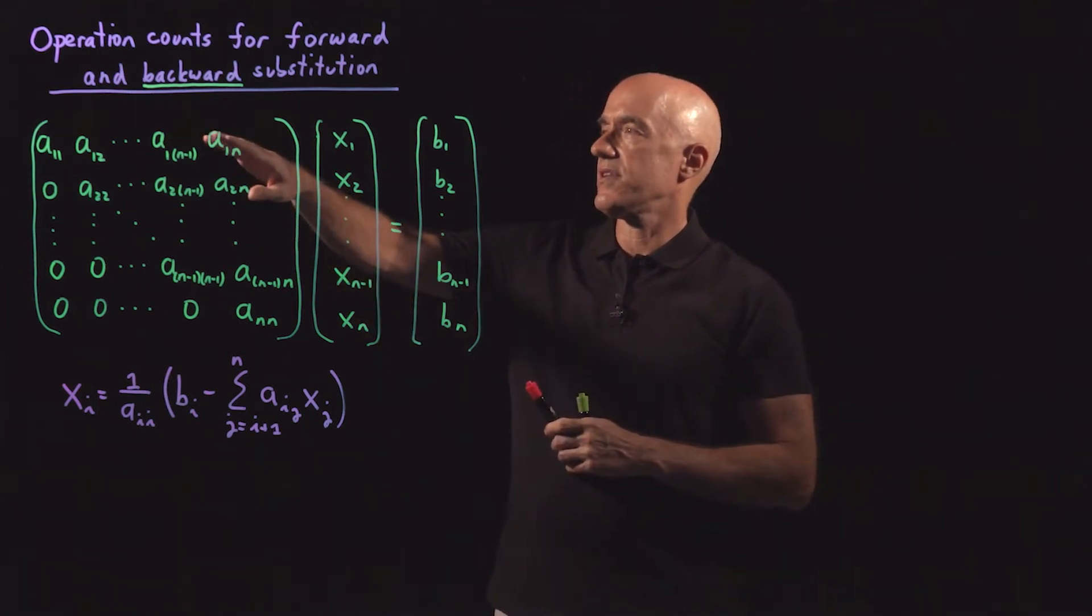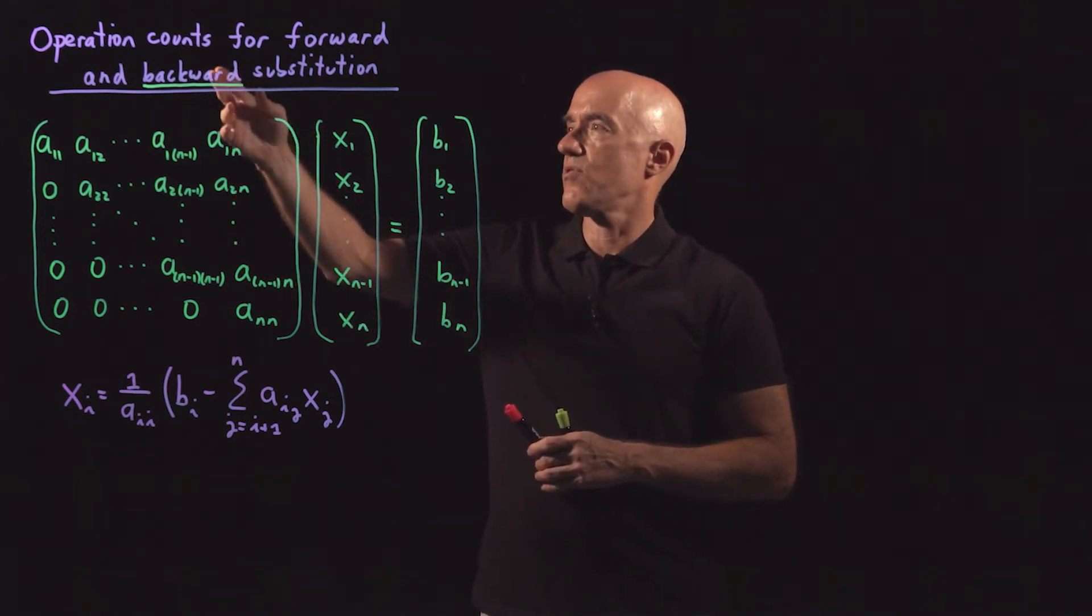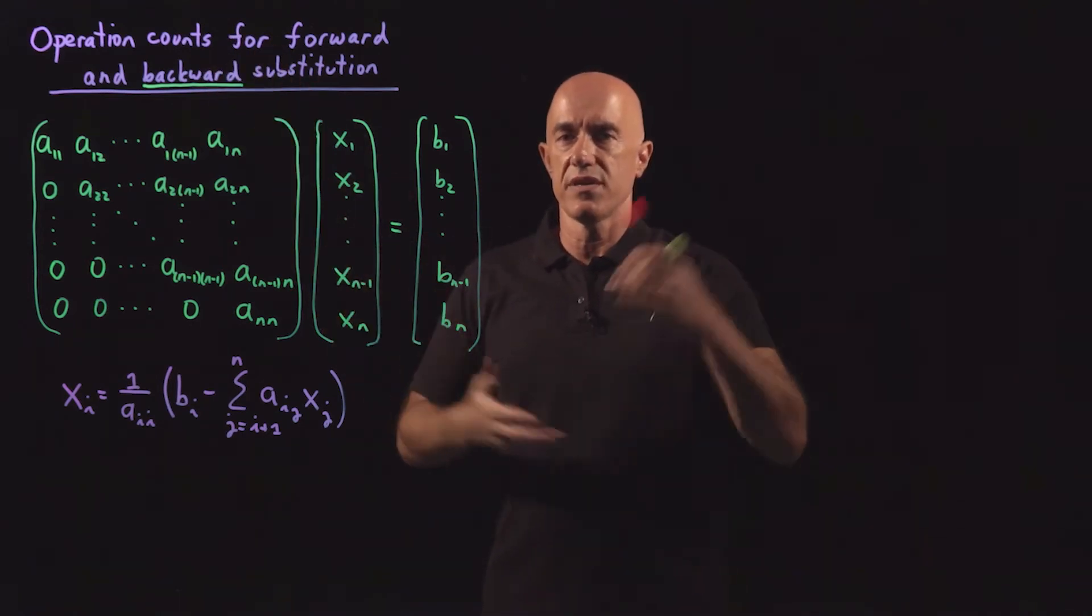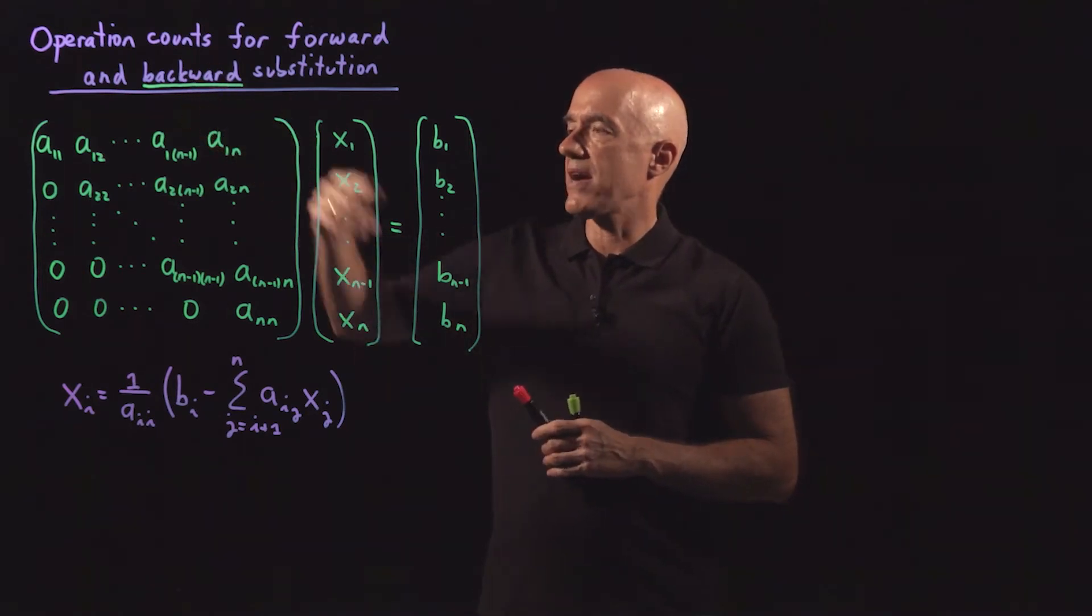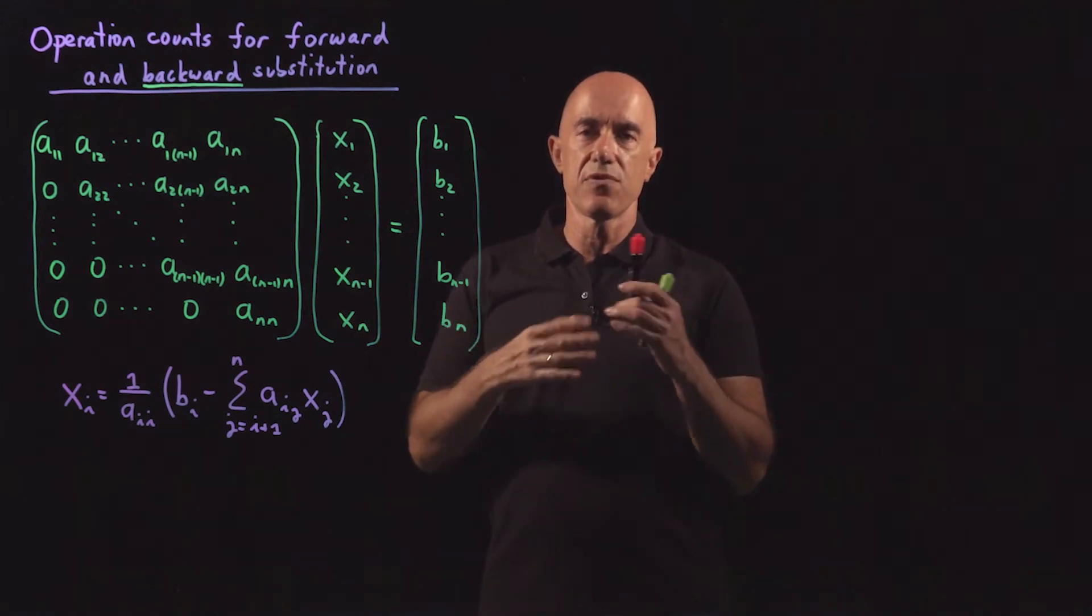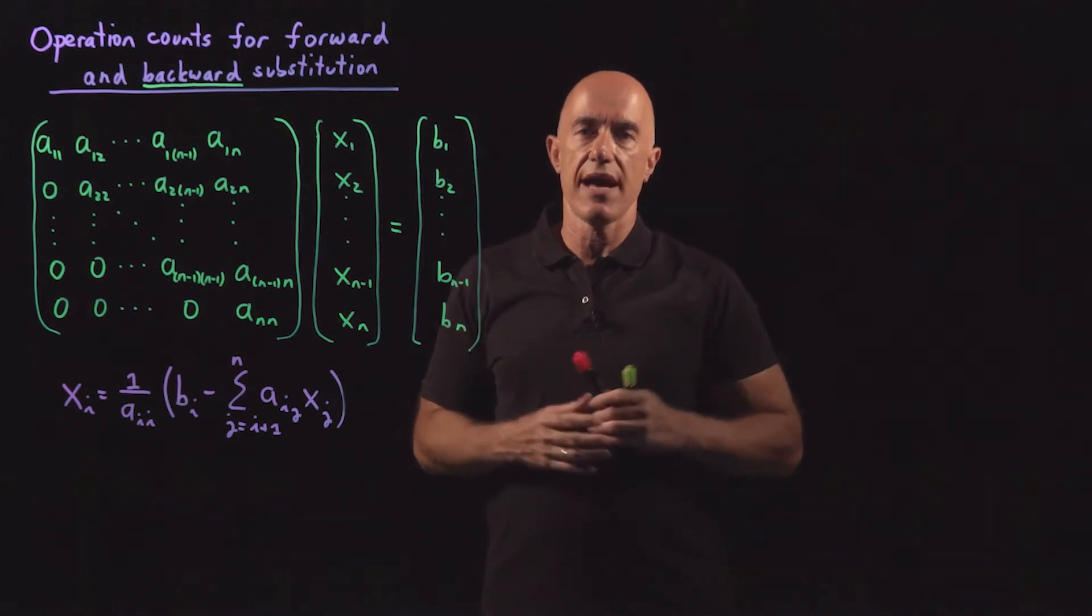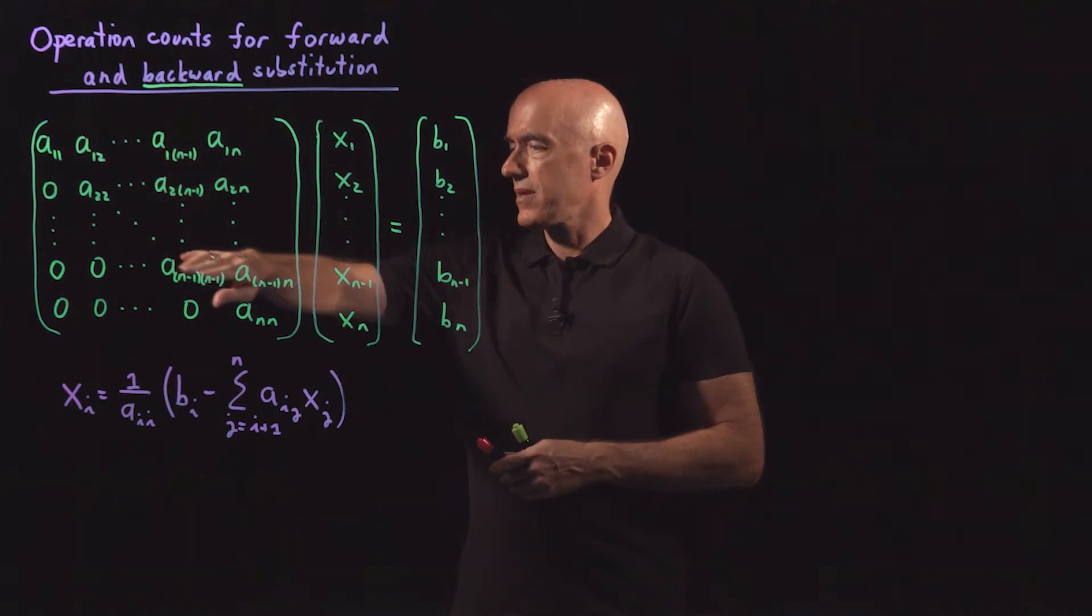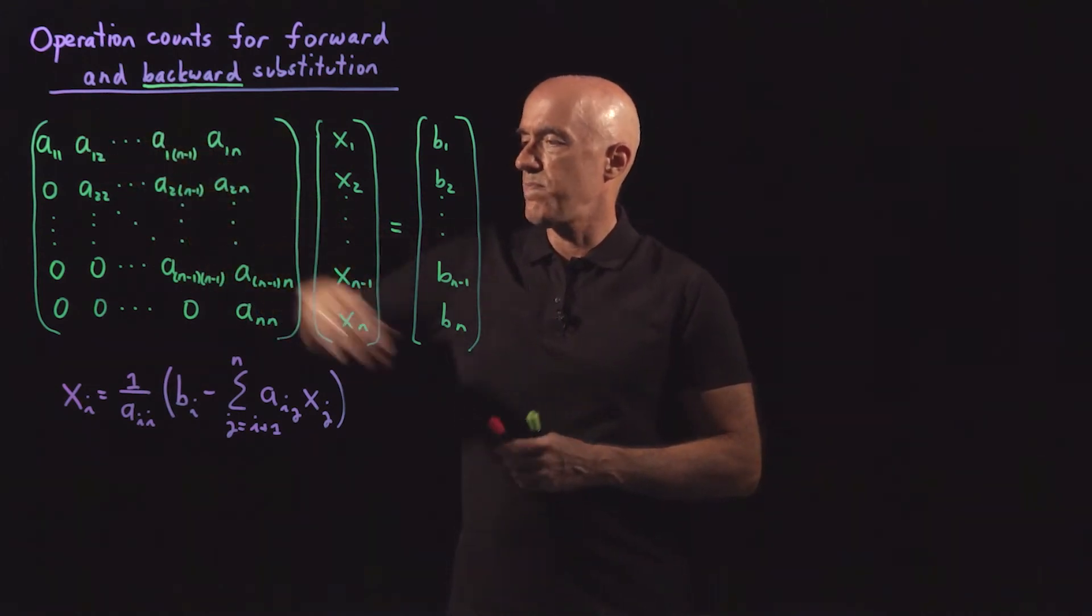Now let's count the number of operations required to do forward or backward substitution. They both will take the same number of operations. One is forward, one is backwards. So we'll do it for backward substitution and then multiply by 2. That would be the number of operations required to solve LUx equals b. So this is our upper triangular matrix. So here we're going to do back substitution.